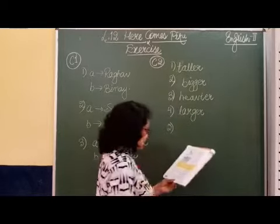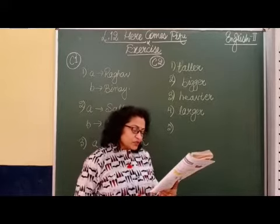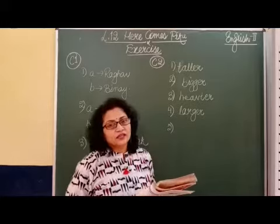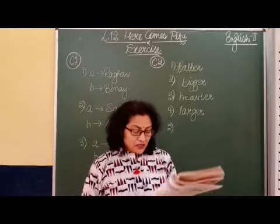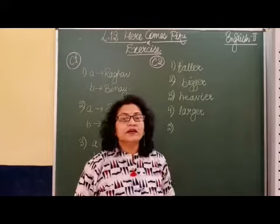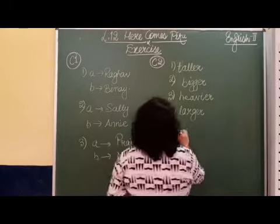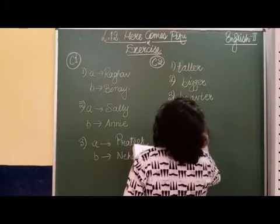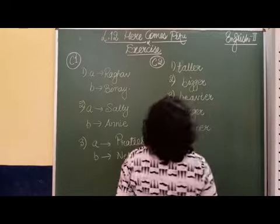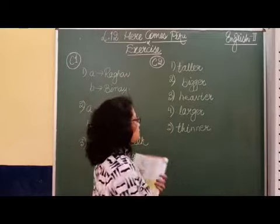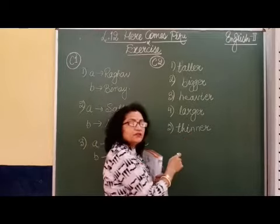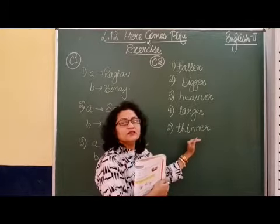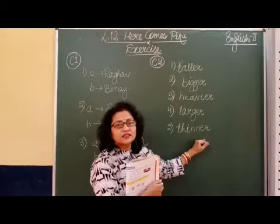Number five: I went on a diet so that I could become dash. The word given is 'thin.' I went on a diet so that I could become thinner. So we will write thinner here. Spelling of thin is T-H-I-N. Here we have added one more N and written thinner — we are adding one more N to write thinner.